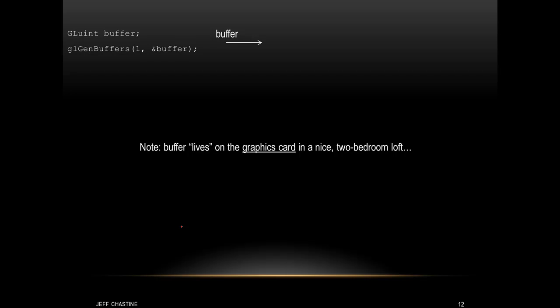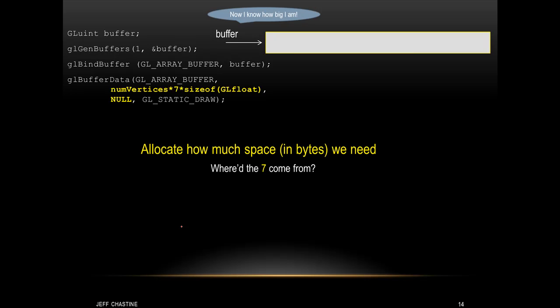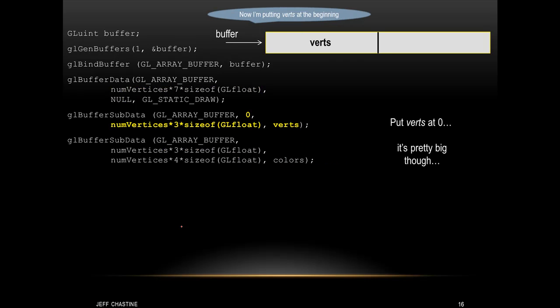In these first two lines, you can see that we ask OpenGL to create a buffer for us and put the ID into the variable called buffer. Just after that, we make a call to glBindBuffer passing it the ID of the buffer. Just after that, we make a call to glBufferData, passing it a couple of different parameters. The first parameter is the constant GL_ARRAY_BUFFER. The next parameter is numVertices times 7 times the size of GLfloat. This is how we tell OpenGL how big of a buffer we need in bytes. The 7 comes from the fact that for every vertex we have 7 parts: x, y, z, and RGBA. The next parameter is null — this is how we tell OpenGL that we'll pass the information at a later point.